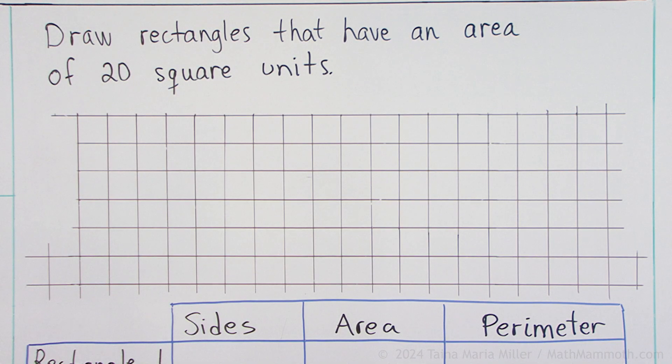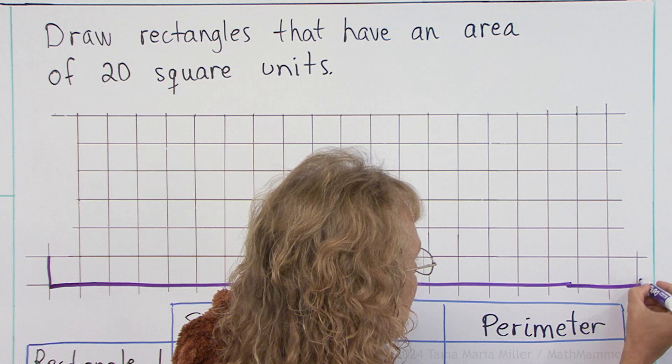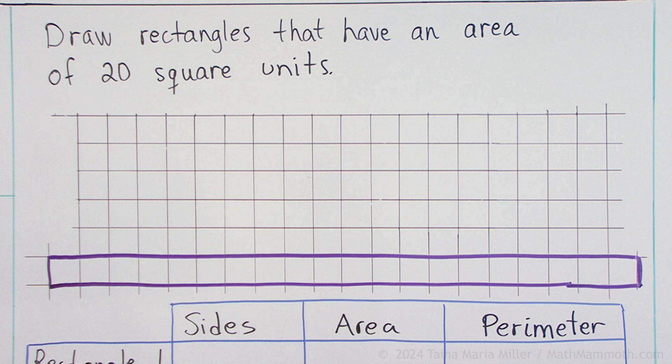One rectangle that comes to mind would be 1 times 20 makes 20. I'm going to draw one here: 1 unit and then 20 units, a very skinny rectangle. This rectangle has the area of 20 square units, 20 squares here.